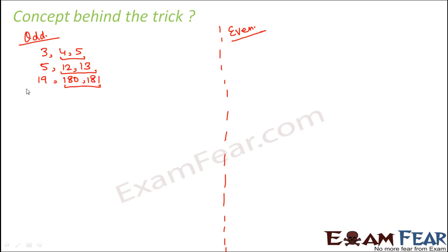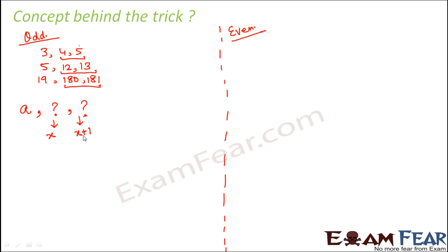So let's say the given odd number is 'a', and we have to find the remaining two members of the Pythagorean triplet. Let us assume the first unknown number is x. The other unknown member would be one more than x — because the difference between the two unknown members is always one — so this third member would be x plus one.